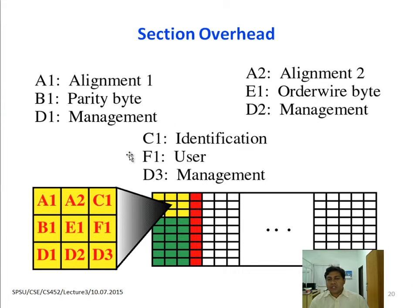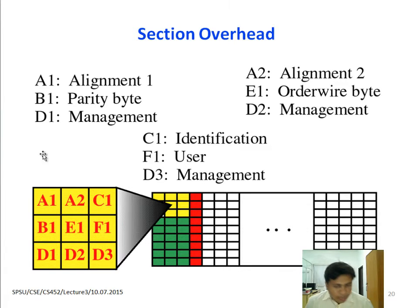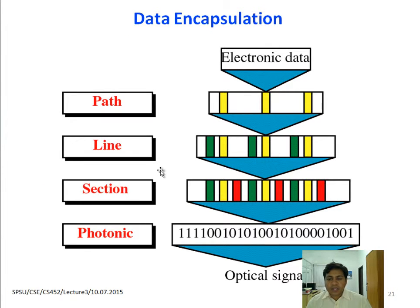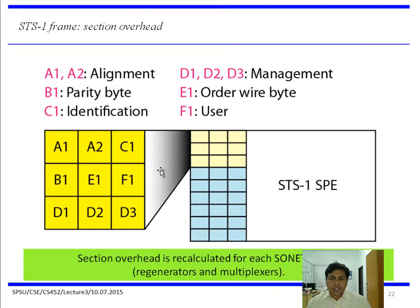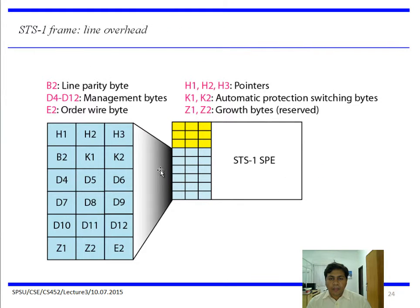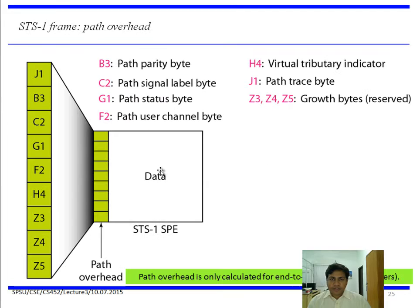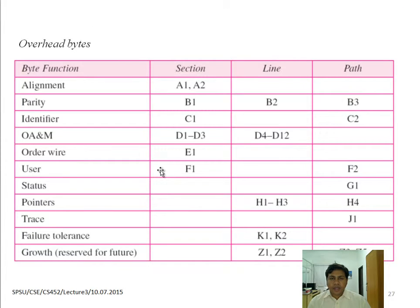This is the structure of the SONET frame with section overhead, line overhead, and total path overhead, plus data — together forming the SONET overhead. We have different measures for identifying different paths, lines, and sections. This is the data encapsulation, with line overhead and path overhead covering different overhead bytes.